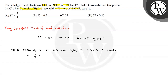Now let's calculate the number of moles of OH⁻ in 0.75 moles of NaOH. NaOH has an acidity of 1, so it liberates one OH⁻ ion per formula unit. Therefore, 0.75 moles of NaOH gives 0.75 × 1 = 0.75 moles of OH⁻.